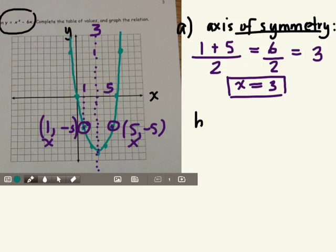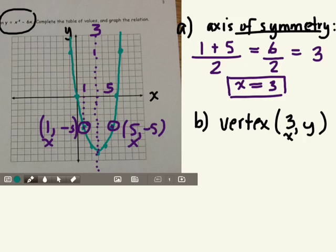We know that the vertex has to be located at 3 something, right? Because the vertex and the axis of symmetry share this point in common. The axis of symmetry goes through the vertex.